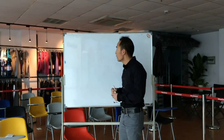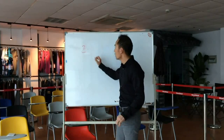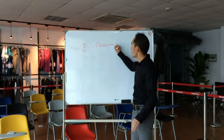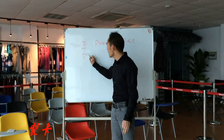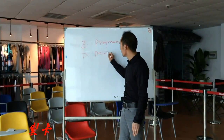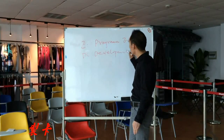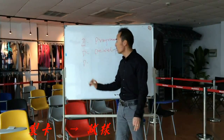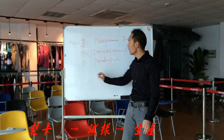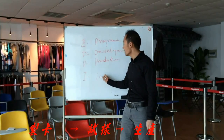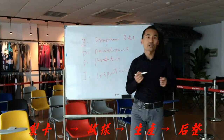Regarding embroidery, we can conclude into four letters: E, D, P, I. E refers to program edit. D refers to development. P means production. And finally, I means inspection.